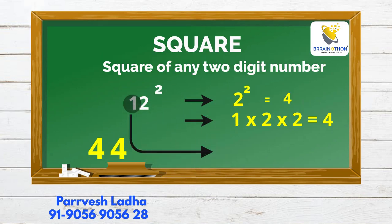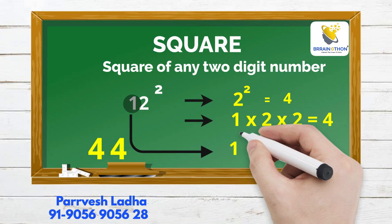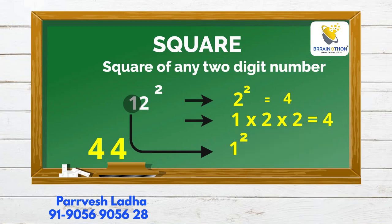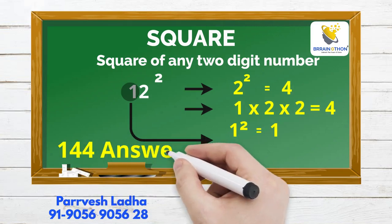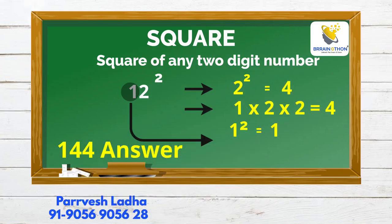The next step is to square our second digit number: 1-squared equals 1. We write 1. Therefore, we get the answer 144.